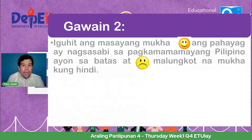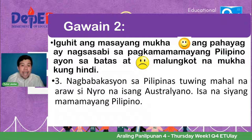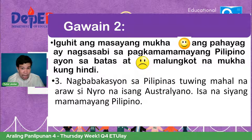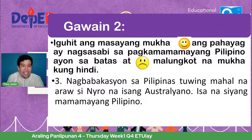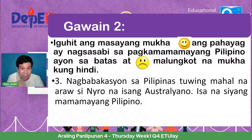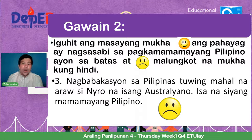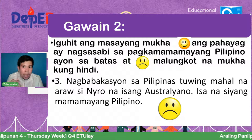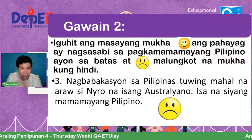Number three: nag-bakasyon sa Pilipinas tuwing mahal na araw si Nero, isang Australyano — isa na siyang mamamayang Pilipino. Happy or sad face? Ang kasagutan ay sad face — kapag bumisita lamang ang isang dayuhan sa ating bansang Pilipinas, hindi natin masasabi na siya ay ganap na mamamayang Pilipino. Pero kapag siya ay nanumpa o nakapangasawa, maaari siyang maging ganap na Pilipino.